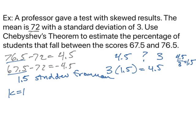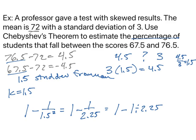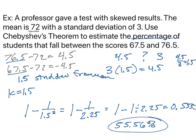That means k is 1.5. So if we want to know the percentage of students that fall between these scores, we would take 1 minus 1 over 1.5 squared. This is the same as 1 minus 1 over 2.25. I'm going to plug that into my calculator, and I get 0.5555 repeating, which means roughly 55.56% of students will fall between the scores 67.5 and 76.5 using Chebyshev's theorem.